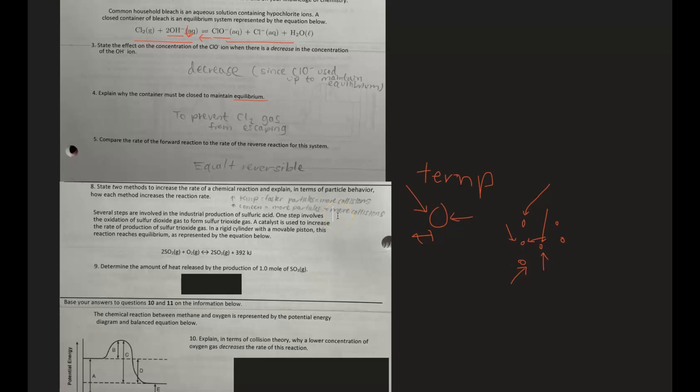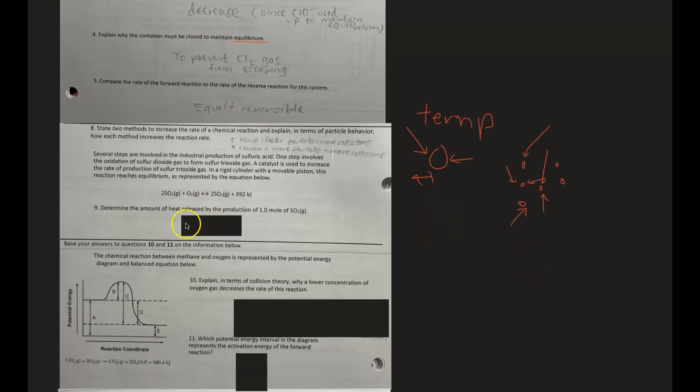Number nine: determine the amount of heat released by the production of one mole of SO3. So here we have two moles of